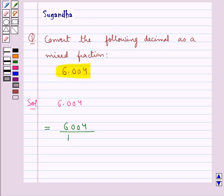the number of zeros as the number of decimal places in the given decimal. So there are 3 decimal places in the given decimal. So there would be 3 zeros with 1 in the denominator. So the given fraction becomes 6004 upon 1000.